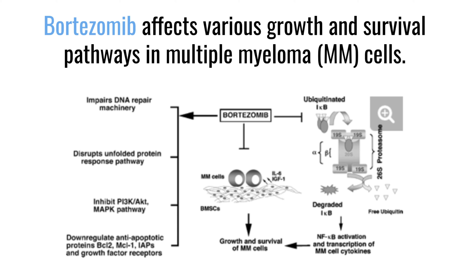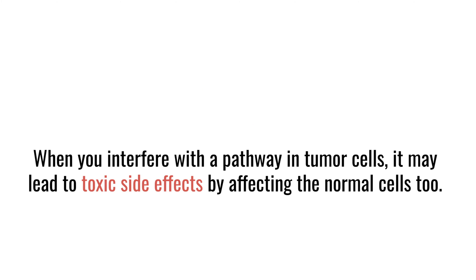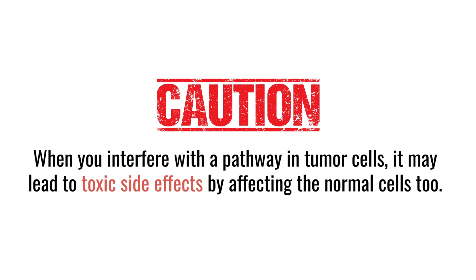There's a potential problem: if you interfere with a pathway in a tumor cell, you may also interfere with pathways in normal cells — and that's where toxic side effects come from. The good news is you're killing the tumor cell; the bad news is you may also be damaging normal cells. So the research is focused on how to target the critical pathways that impact only the tumor cell without destroying normal cells, and that's part of the ongoing research.